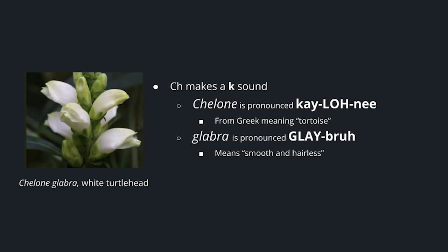If you have a C-H combination, it makes a K sound. In this example, we have Chelone — from the Greek meaning tortoise — and glabra, which means smooth and hairless. So that's Chelone glabra, which is the white turtlehead.